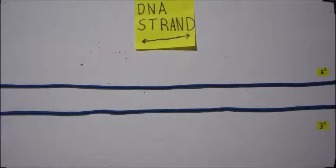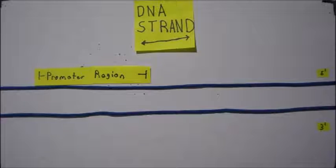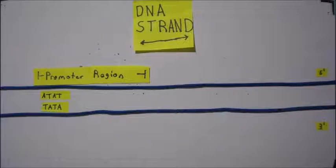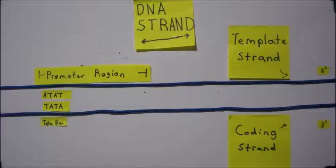Here is a piece of DNA. Only one of the two strands of DNA is transcribed. This is called the template strand. The strand that is not transcribed is called the coding strand.